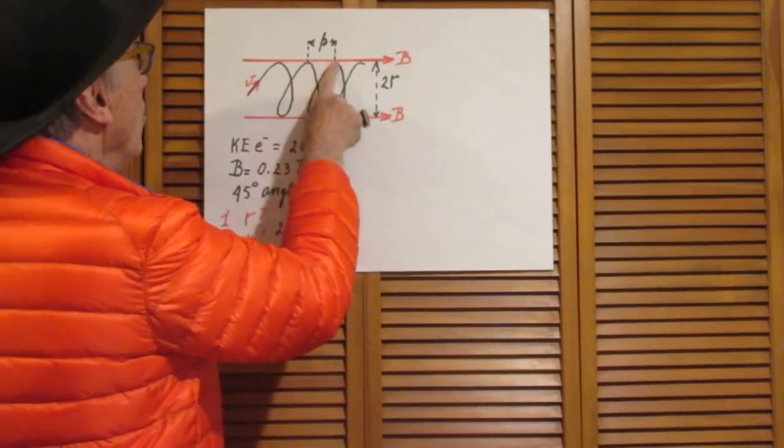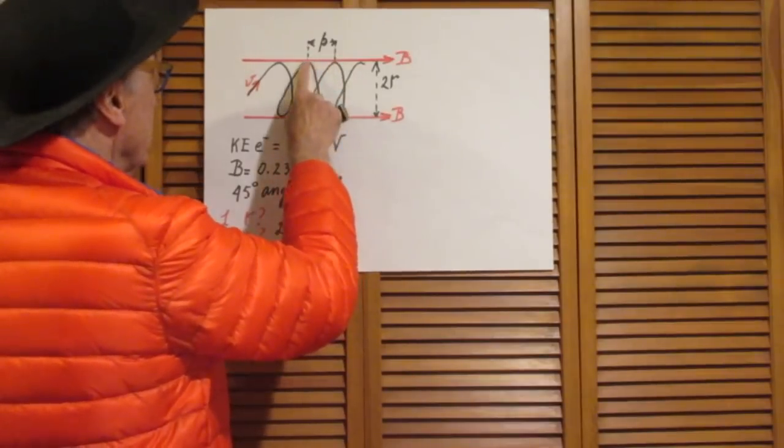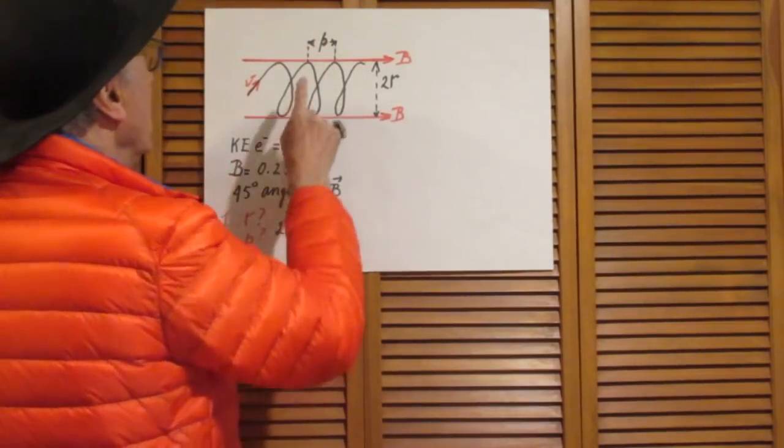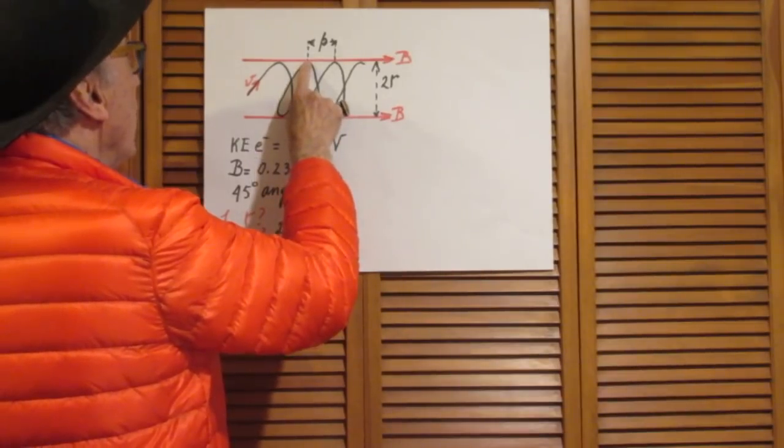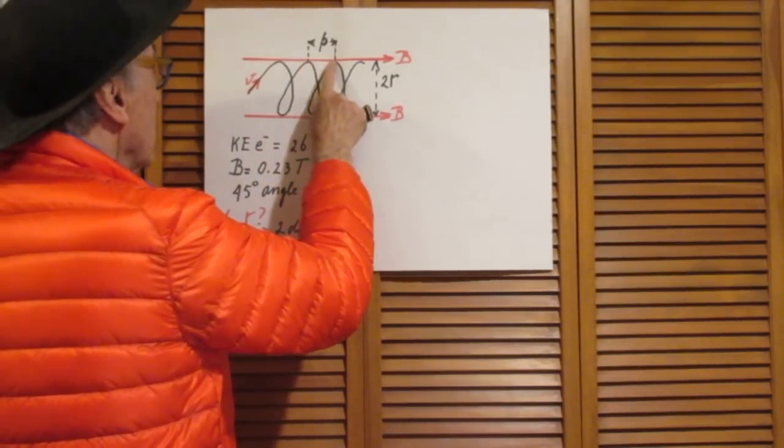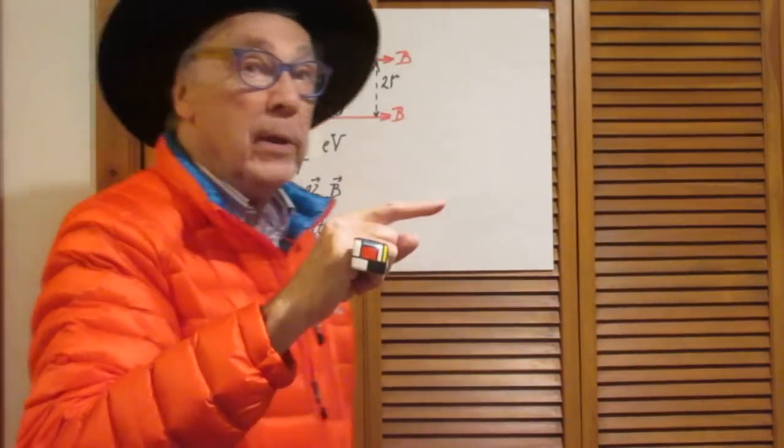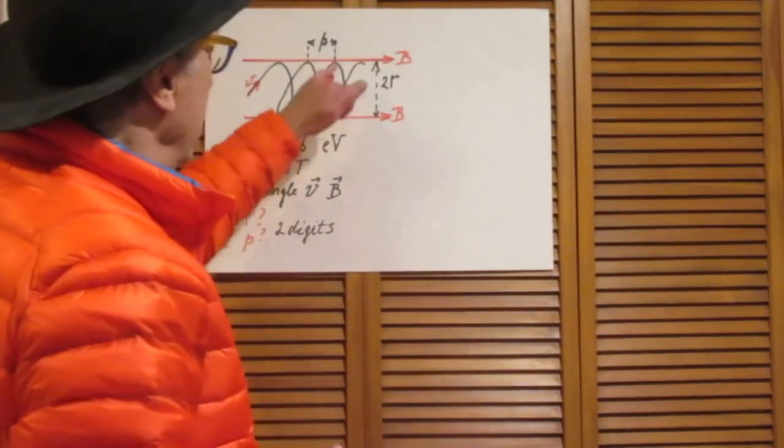And then I want to know what is the pitch. We call that P. The pitch is the distance from here to there. So when the electron is going to spiral, then it is at the top. And a little later it's again at the top. That separation in space is P.